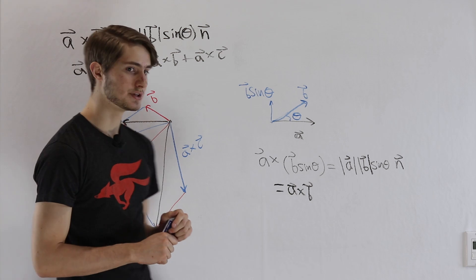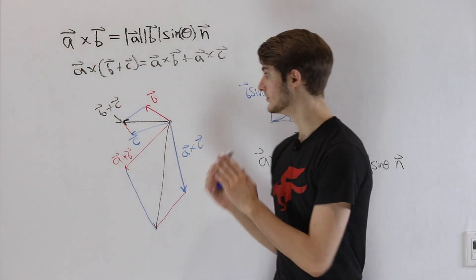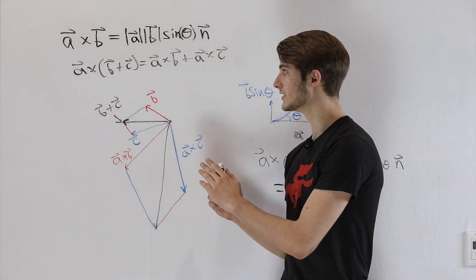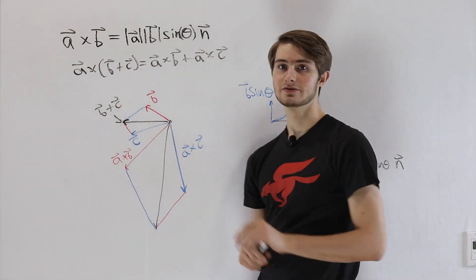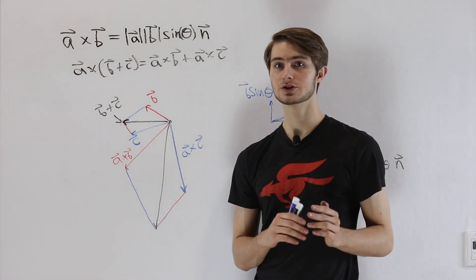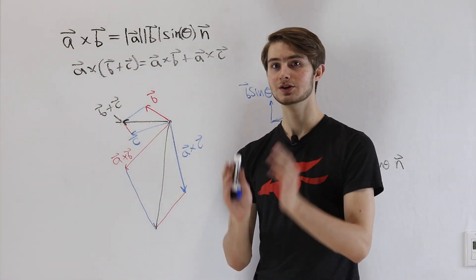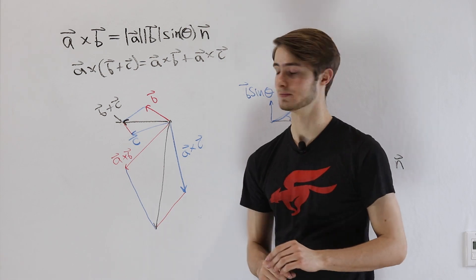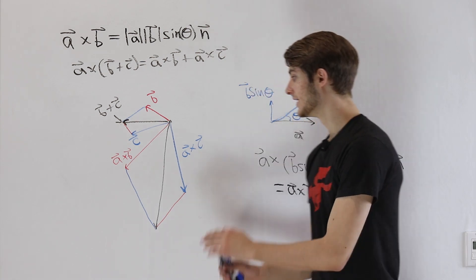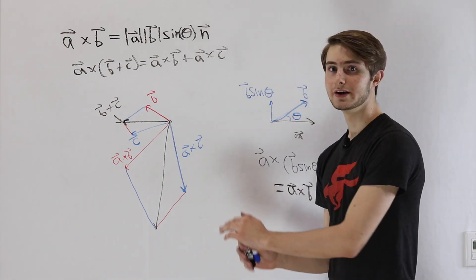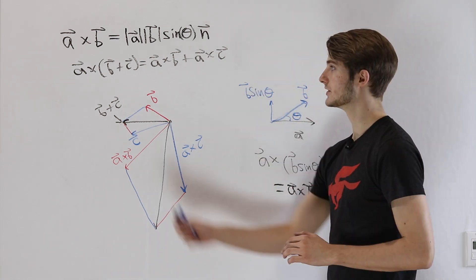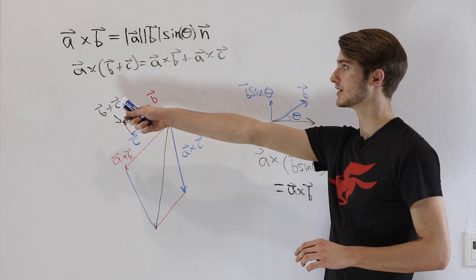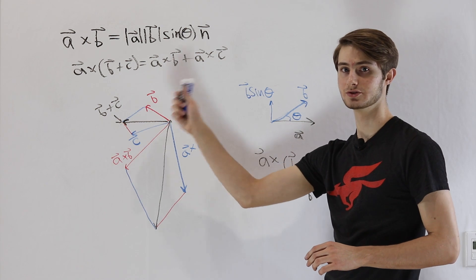So that's the generalization of this proof to any vector — we just reduce it to its orthogonal component, and that's where the sine comes from. This diagram is the proof that the cross product is distributive.